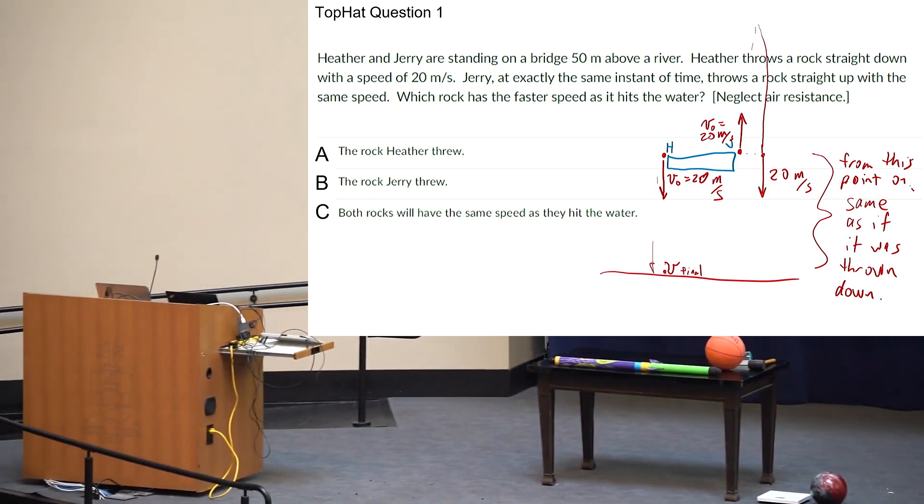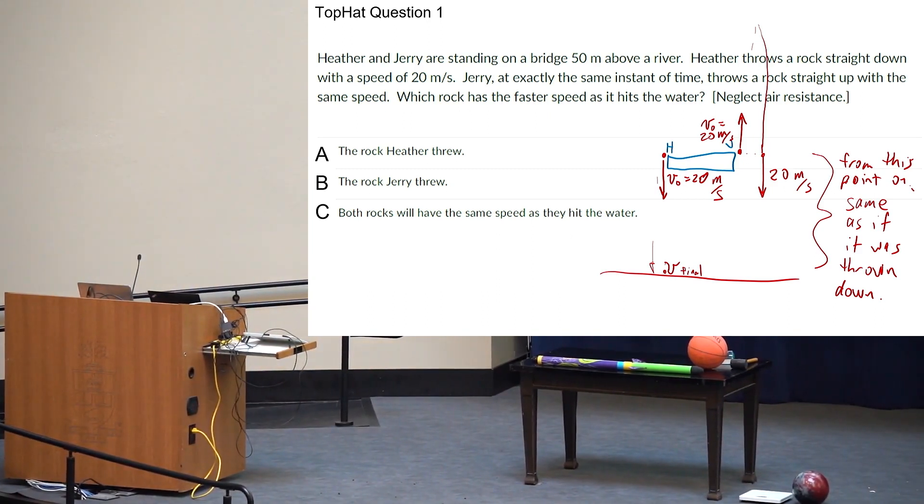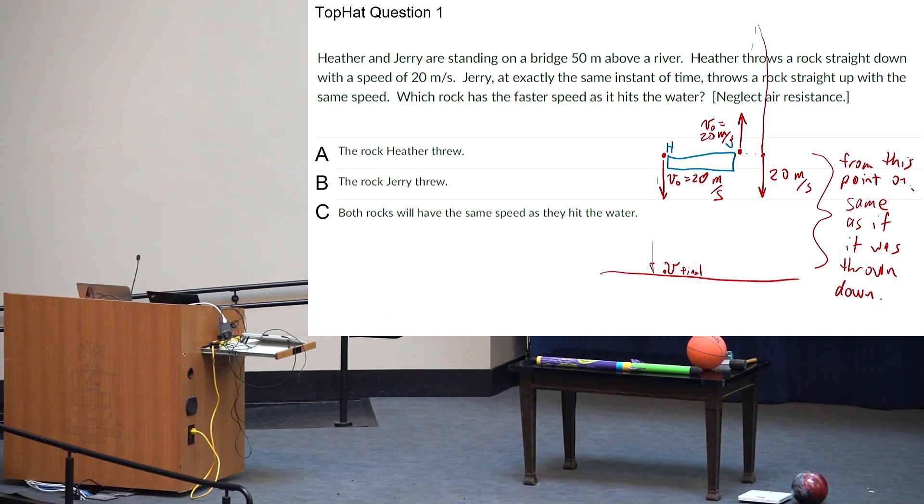Because it slows down at 9.8, stops, and then from rest, accelerates down also at 9.8 for the same amount of time. So after this point, it's the same as if it was thrown straight down. It'll take longer for Jerry's rock to hit the water. It'll hit later, but when it hits the water, it will have the same speed as Heather's rock.